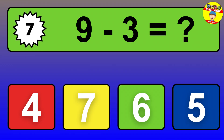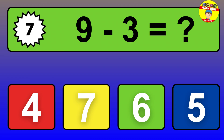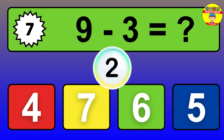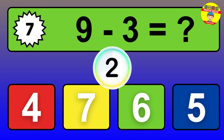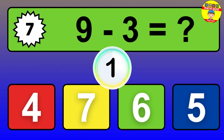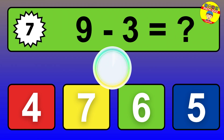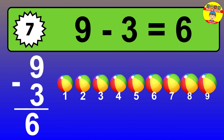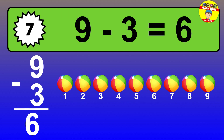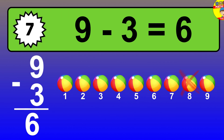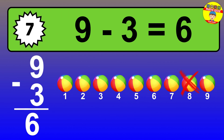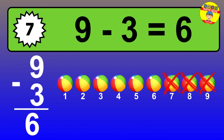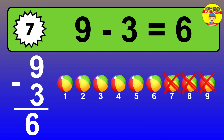Question 7. 9 minus 3 equals what? So the answer is 9 minus 3 is 6. Let's count it. 1, 2, 3, 4, 5, 6.